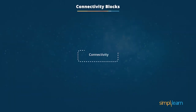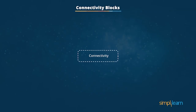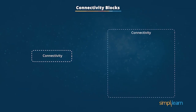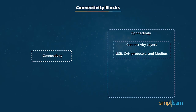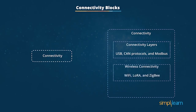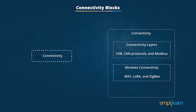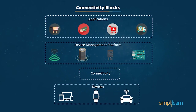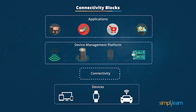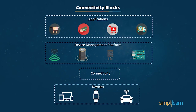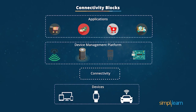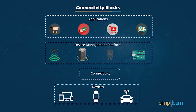Connectivity blocks are considered the backbone of an IoT setup. There are various connectivity layers like USB, CAN protocols, and Modbus. The next-generation protocols of Wi-Fi are LoRa and Zigbee, which can interface with any application or modules — a small device embedded in an object. The entire landscape is called gateway architecture. The device interface is important for data transfer and enables digital transformation with third-party applications and systems.